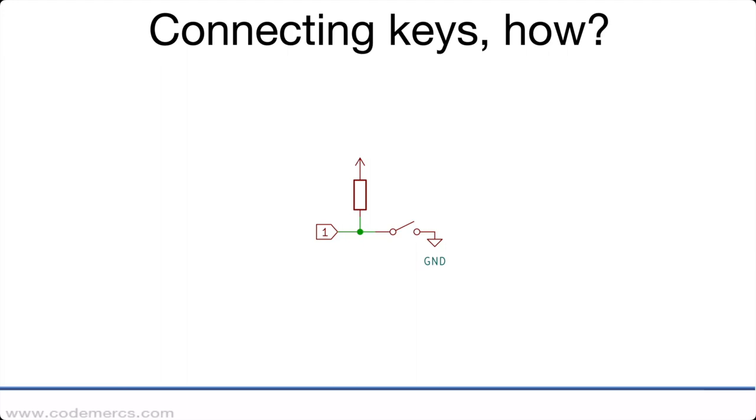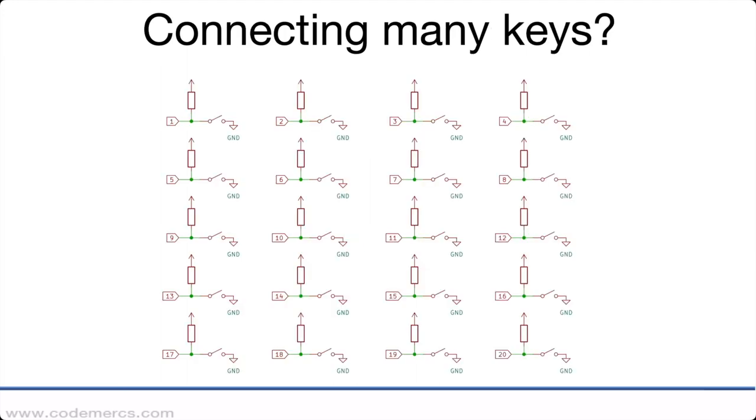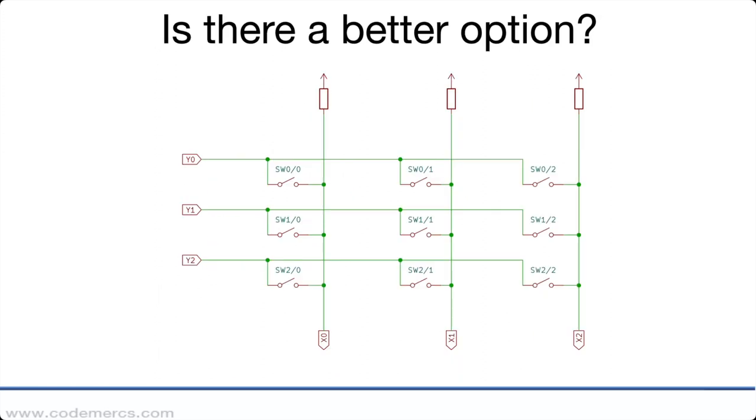But when you have more than a few keys it gets complicated. Like in this example, if you have 20 keys you need 20 inputs on your controller, and a typical desktop keyboard has more than 100 keys. So that gets quite complicated and expensive. It's much more efficient to arrange the keys in a matrix.